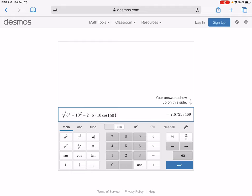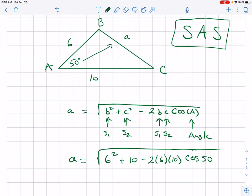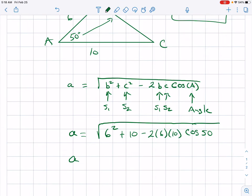All right, so our answer is about seven point six seven. We're going to round it off. Let's try a couple more examples.